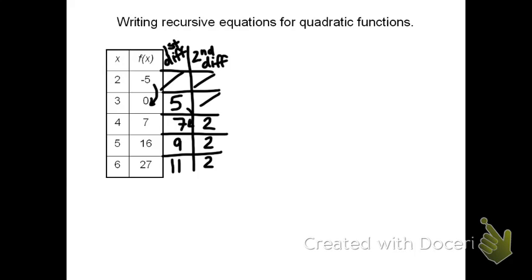When it comes time to actually write the recursive value, I'm going to do that by defining the beginning term. Here, f of 2 was 5. Actually, it's negative 5.